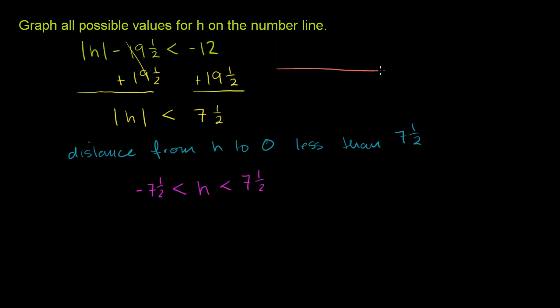So if this is the number line right there, that is 0. And let me draw some points. Let's say that this is 7, that is 8, that is negative 7, that is negative 8. What numbers are less than 7 and a half away from 0? Well, you have everything all the way up to 7 and a half is exactly 7 and a half away, so you can't count that. So 7 and a half, you'll put a circle around it.